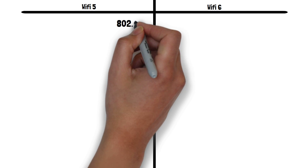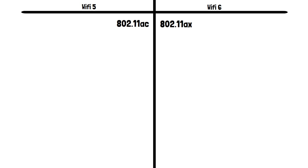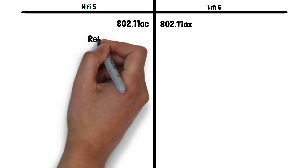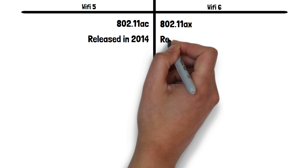Let's start with their names. Both have other names they're commonly known by that we can see here. These names are based on the Institute of Electrical and Electronics Engineers naming convention, which named the first generation of Wi-Fi as the 802.11 protocol and added additional letters for each additional generation of Wi-Fi. Wi-Fi 5 was released in 2014 and Wi-Fi 6 in 2019.